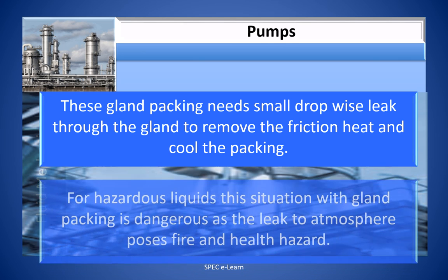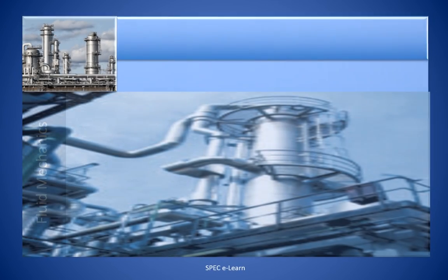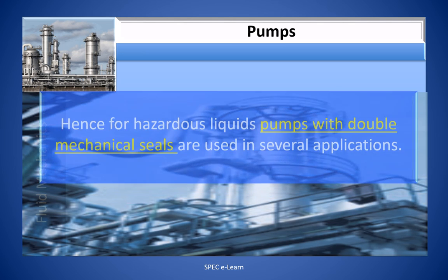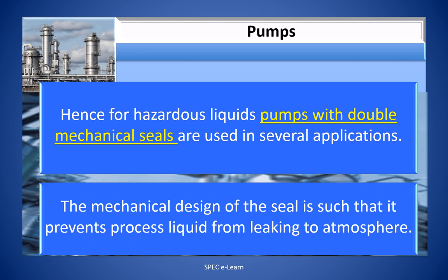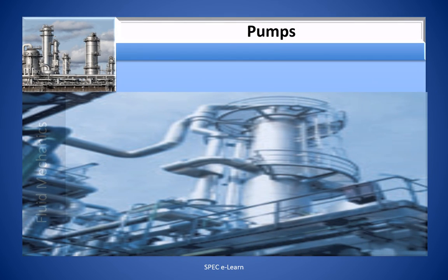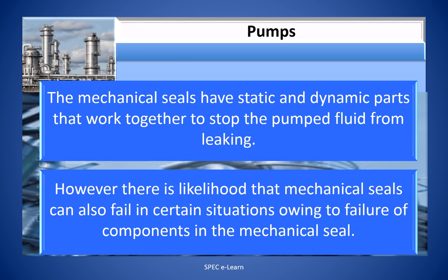For hazardous liquids, this situation with gland packing is dangerous as a leak to atmosphere poses fire and health hazard. Hence, for hazardous liquids, pumps with double mechanical seals are used in several applications. The mechanical design of the seal is such that it prevents processed liquid from leaking to atmosphere. The mechanical seals have static and dynamic parts that work together to stop the pumped fluid from leaking. However, there is likelihood that the mechanical seals can also fail in certain situations owing to the failure of components in the mechanical seal.